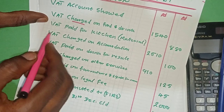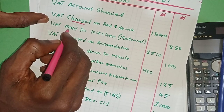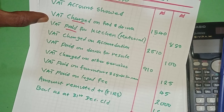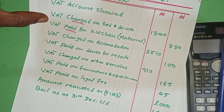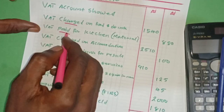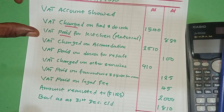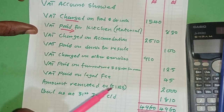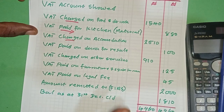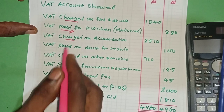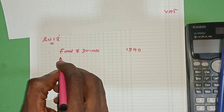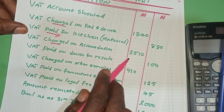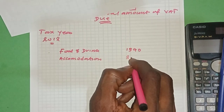Let's check the next one: VAT paid for kitchen materials. When do you pay VAT? It's when you are buying, when you are purchasing. So that is tax input - let's set it aside and concentrate on tax output first. Next is VAT charged on accommodation - that is when you are selling, so this is tax output. Accommodation: 2,510.